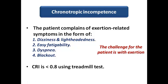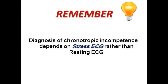In chronotropic incompetence, the challenge is with exertion, not at rest, which explains the normal resting ECG. Diagnosis requires a stress ECG — treadmill test. Do not diagnose chronotropic incompetence without performing a treadmill test to confirm that symptoms such as dizziness, lightheadedness, easy fatigability, dyspnea, or blackout on exertion are actually caused by chronotropic incompetence.